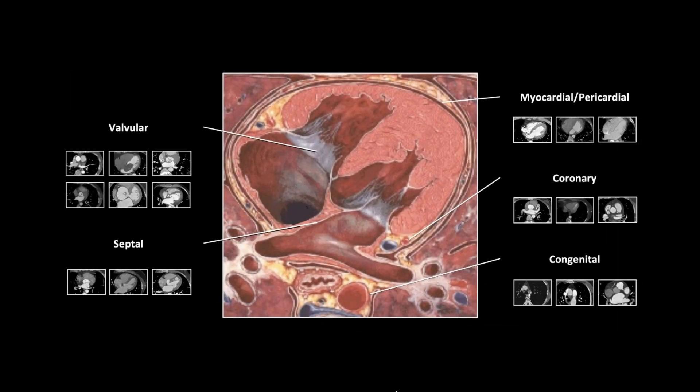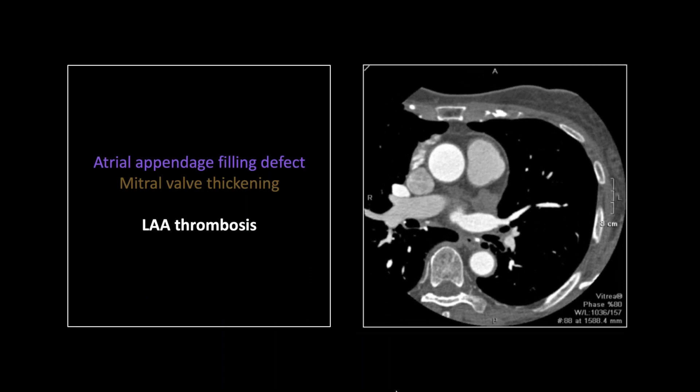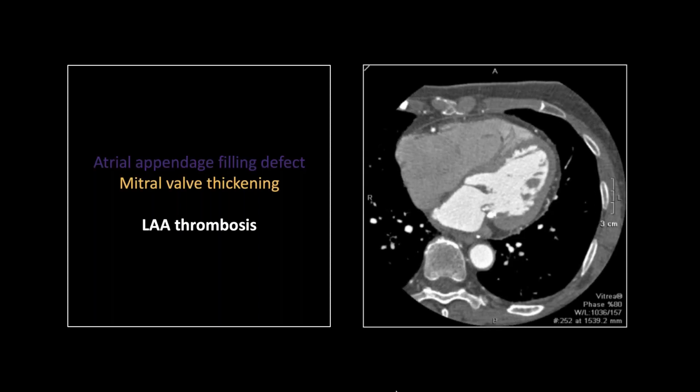Let's move to some valvular stuff. We've already seen a few valvular complications; we're going to round that out with some gated studies now. So this is a favorite in all courses in coronary CTA — they will throw one of these in — and that's the atrial appendage filling defect. This one is complete and unquestionable: this is a clot. These can be tough, and I'll show you some other examples where they're pretty tricky. Look at the mitral valve cusps: they're thick, they're irregular, they're calcified, they're completely asymmetric. This one is not tough to call mitral stenosis on. They're also a little too close together.